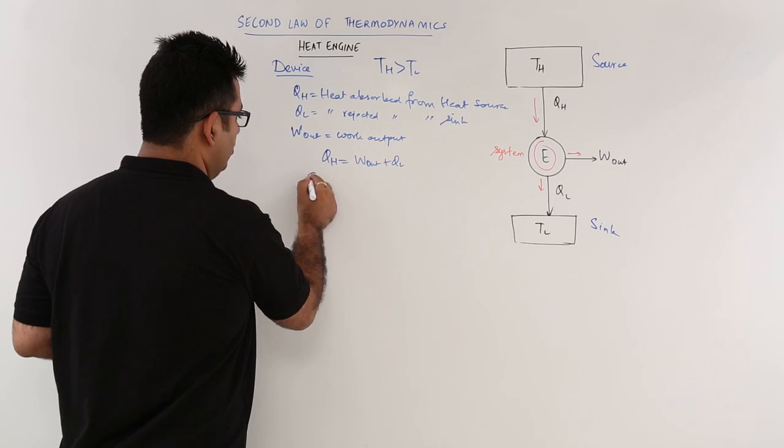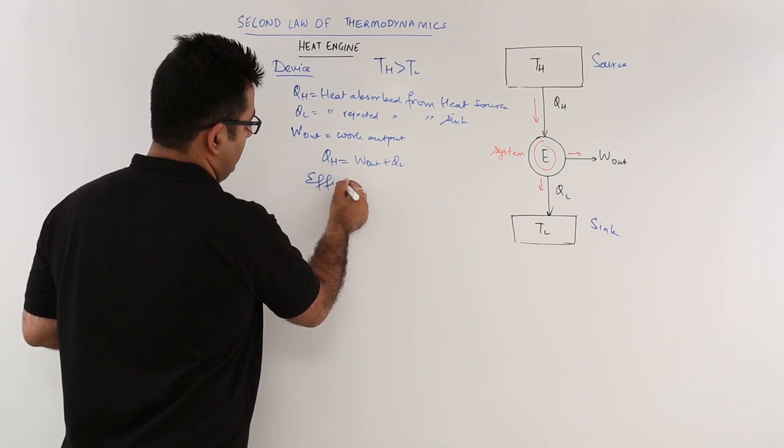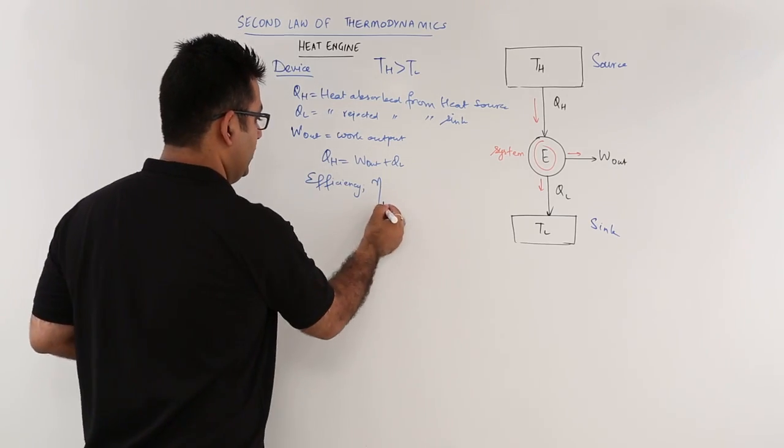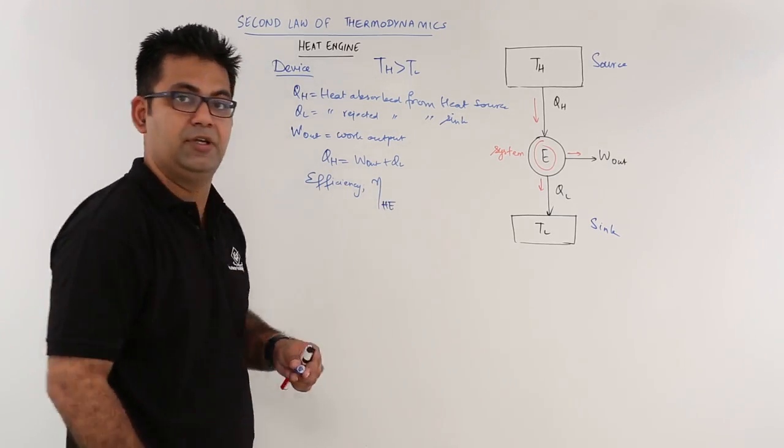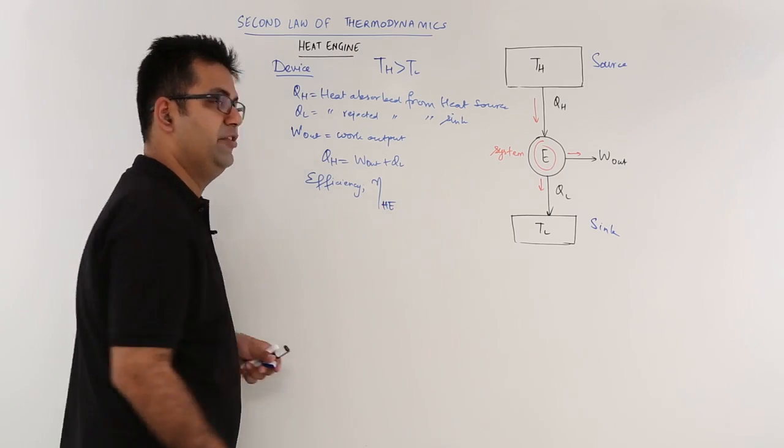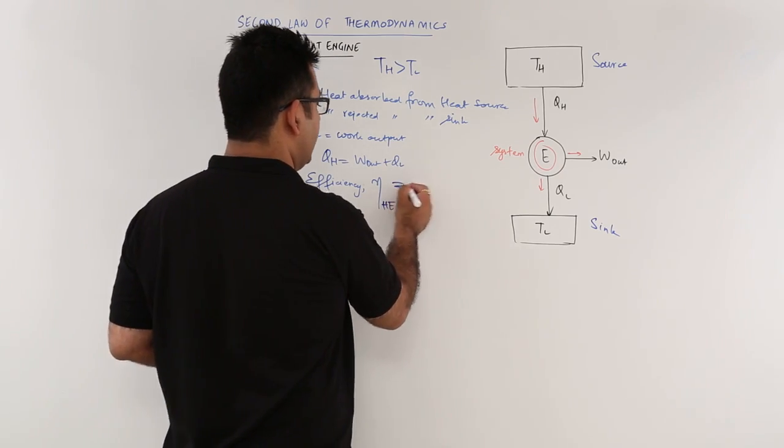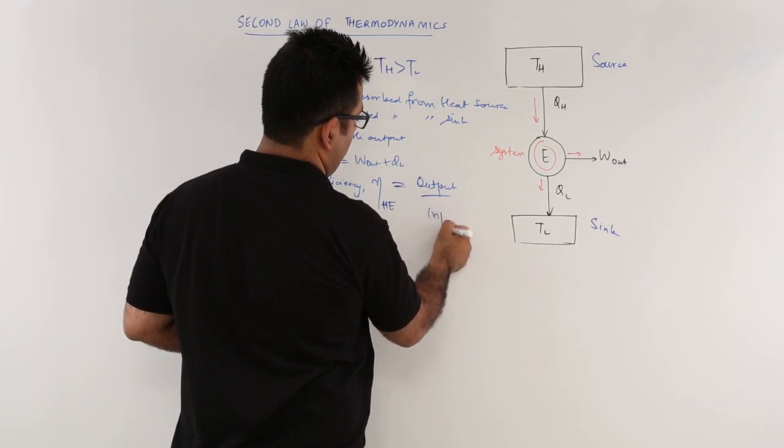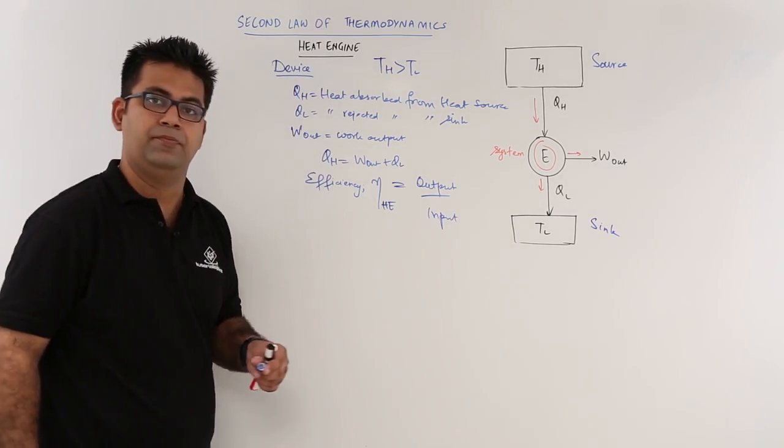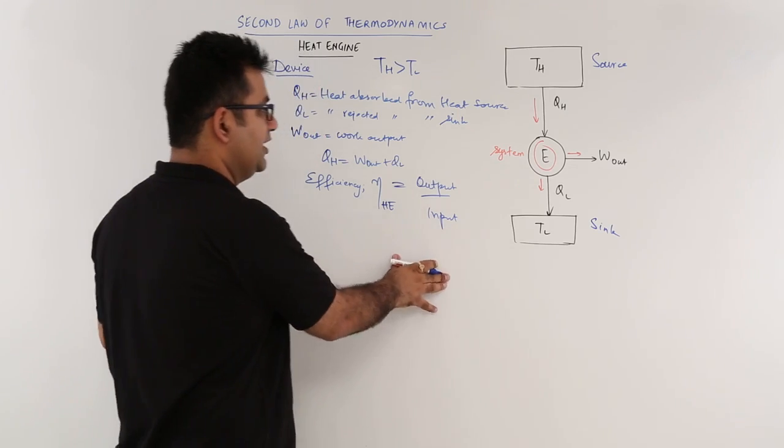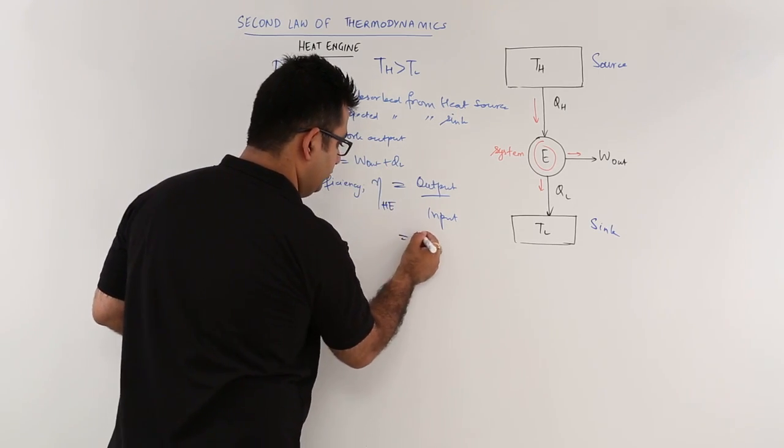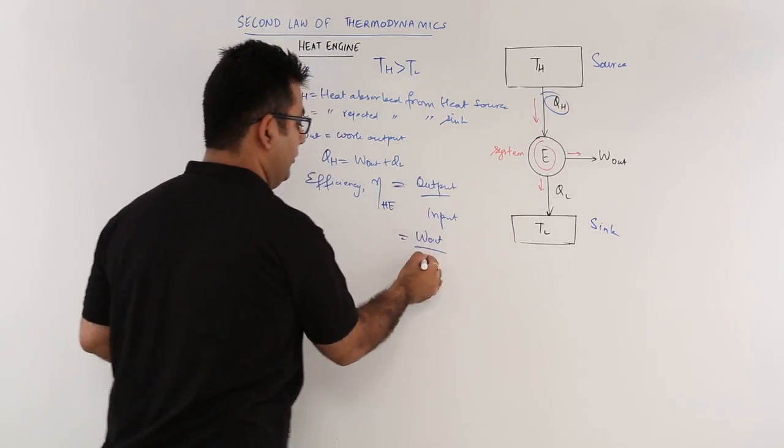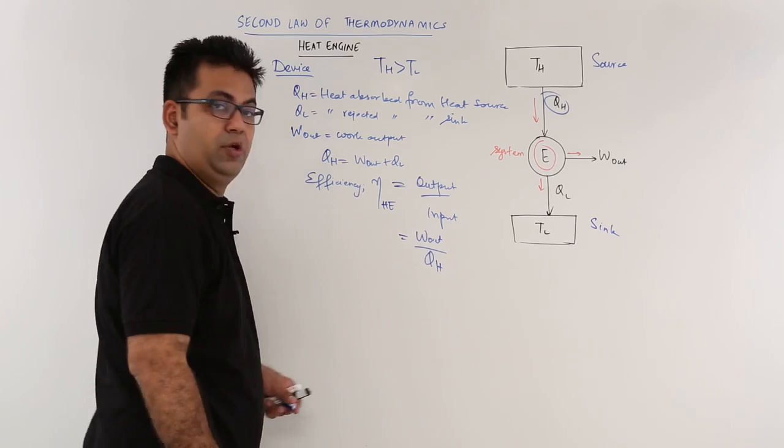So now this gives rise to the heat engine efficiency, and that is eta, eta HE which denotes the heat engine efficiency. Now efficiency is basically output upon input. Now output in this case is Wout, and input in this case is the heat input from TH, so QH.